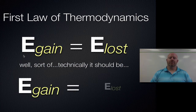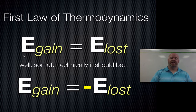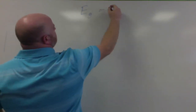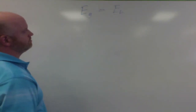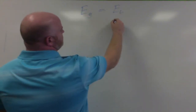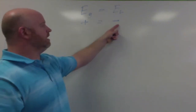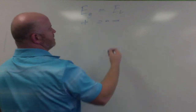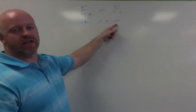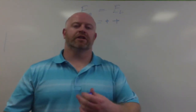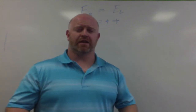Mathematically, when we set these two equations equal to each other we have to add one little piece — a negative sign. Energy loss is always a negative value and energy gained is always a positive value, so a positive can't equal a negative. We add an additional negative sign so we have a negative with a negative, which then makes a positive.